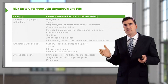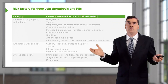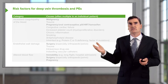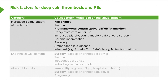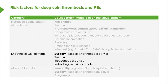Deep vein thrombosis and pulmonary emboli share the same risk factors because deep vein thrombi are the source for pulmonary emboli most of the time. These risk factors can be divided into three categories. The first is increased coagulation of the blood; common causes include pregnancy, the oral contraceptive pill, other hormonal therapy, and malignancy. It also occurs in patients with congestive cardiac failure, increased platelet count due to myeloproliferative disorders of the marrow, chronic inflammation, and smoking.